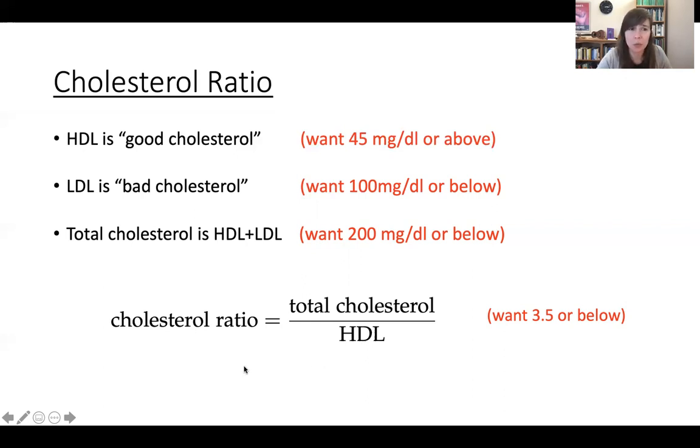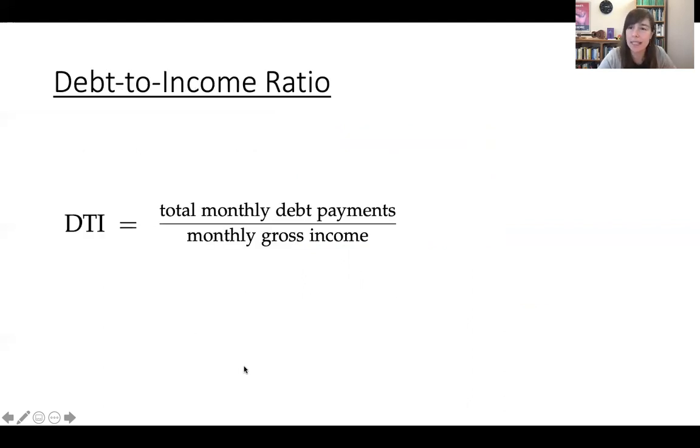All right, so that's one application of ratios your book discusses. And the other is the debt to income ratio. So this is calculated by taking your total monthly debt payments and dividing it by your total monthly gross income. Now, in one sense, if you're just given those numbers, then you take one number, you divide it by the other. What is tricky about these problems potentially is just understanding really what counts as a monthly debt payment and what counts as your monthly gross income.